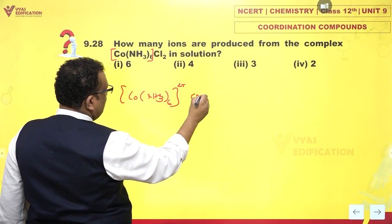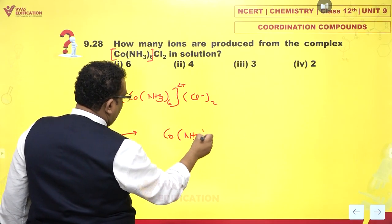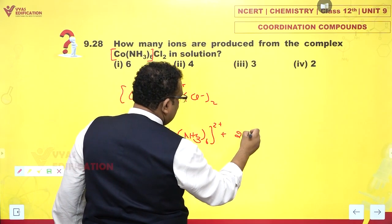This is 2 plus and Cl minus whole twice. It would split as Co(NH3)6 2 plus, plus 2 times Cl minus.